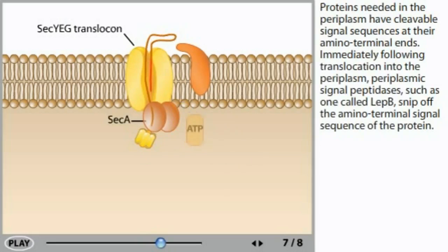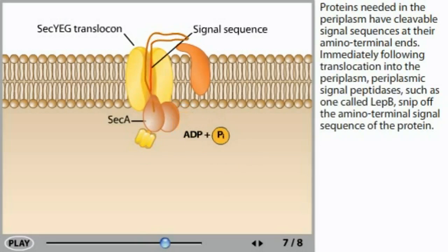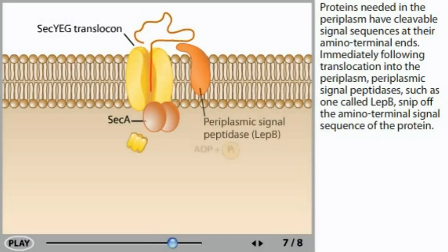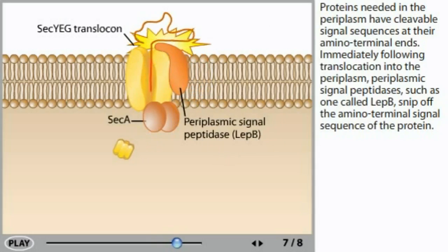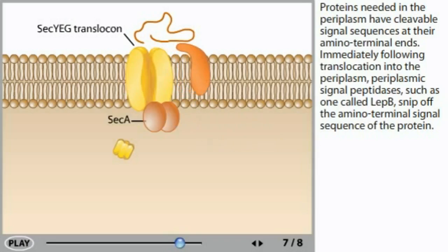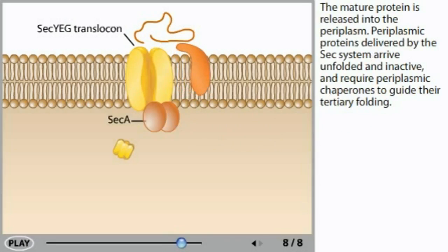Proteins needed in the periplasm have cleavable signal sequences at their amino terminal ends. Immediately following translocation into the periplasm, periplasmic signal peptidases, such as one called LEP-B, snip off the amino terminal signal sequence of the protein. The mature protein is released into the periplasm.